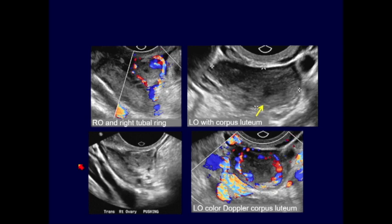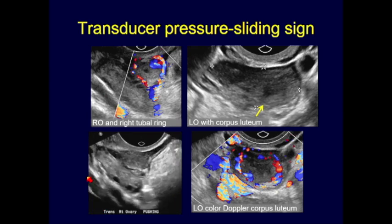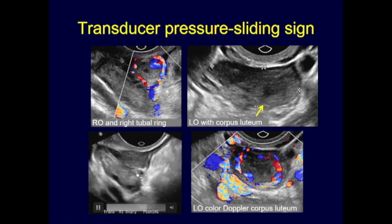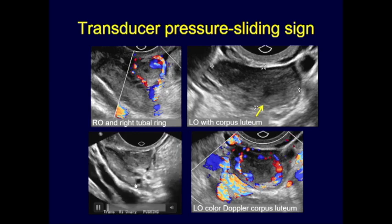If the tubal ring and corpus luteum are adjacent to one another, we can use the sliding sign — applying transducer pressure to show that one moves separately from the other — to help differentiate them.